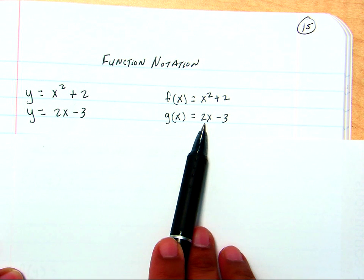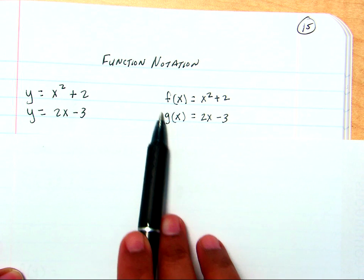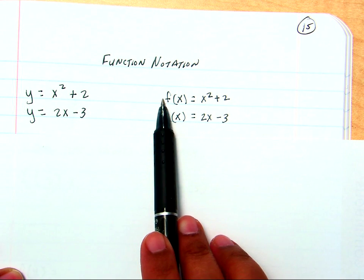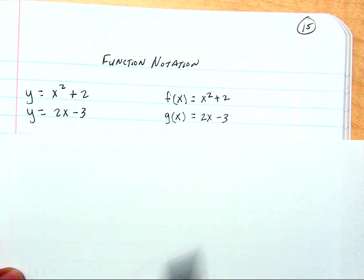And g of x, and you know that I'm talking about x squared, I'm sorry, 2x minus 3. So, the Function Notation just allows us to call it f of x and g of x, and you know exactly which equation I'm talking about.